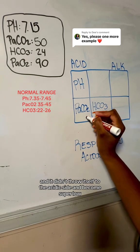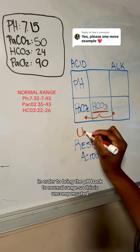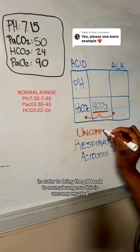This bicarb did not throw itself to the alkalotic side and become super high, and it didn't throw itself to the acidic side and become super low in order to bring the pH back to normal range. So this is uncompensated.